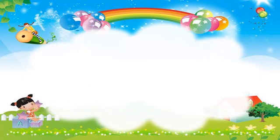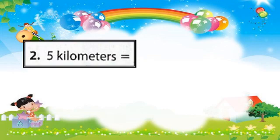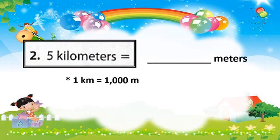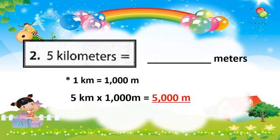Question number 2: Convert 5 kilometers to meters. Remember that 1 kilometer equals 1,000 meters. So multiply 5 kilometers by 1,000 meters. The answer is 5,000 meters.